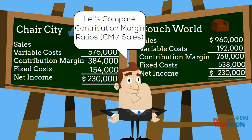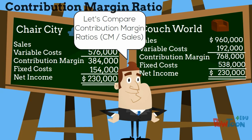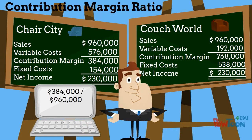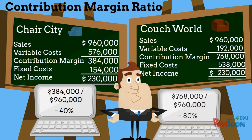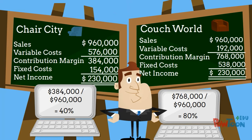Now let's compare the contribution margin ratios for each company. Due to the high variable costs, Chair City's ratio is 40%, while Couchworld with much lower variable costs has a higher ratio of 80%. This means that with each sale of Couchworld's products, more money is used to cover fixed costs.